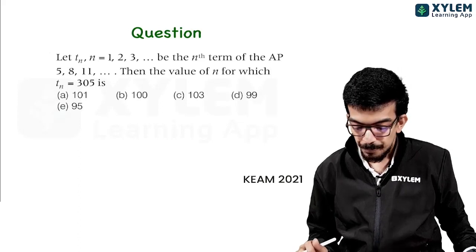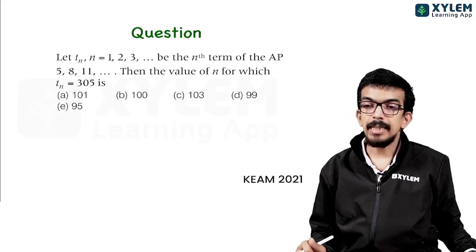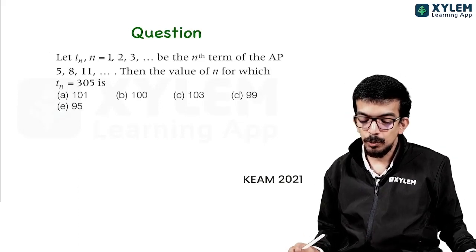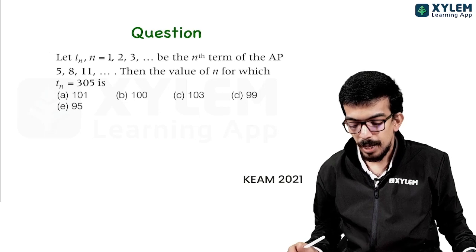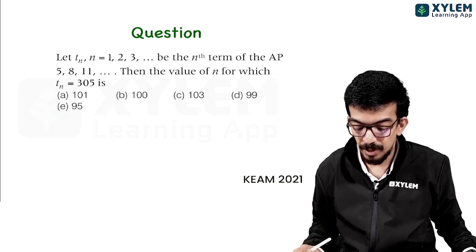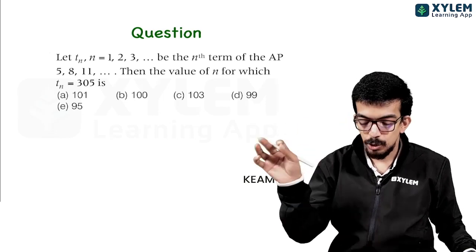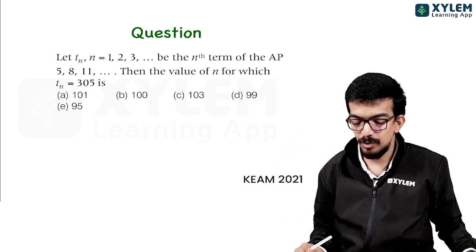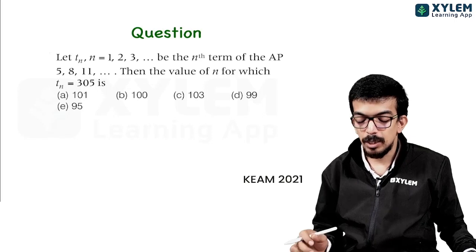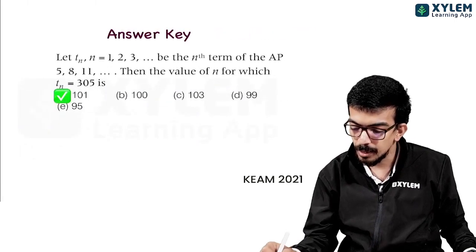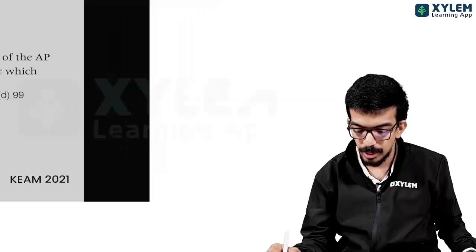Next question. Let Tn, where n is equal to 1, 2, 3, up to n, be the nth term of the AP: 5, 8, 11, and so on. Then the value of n for which Tn is equal to 305 is. A simple 10th to 12th grade question.